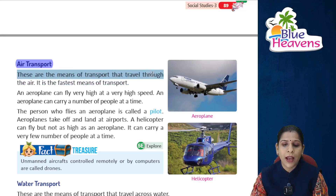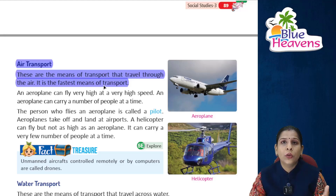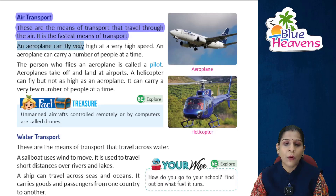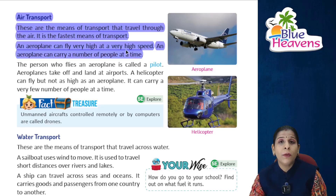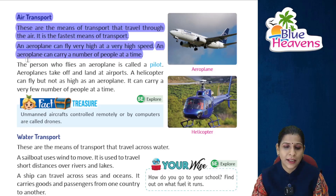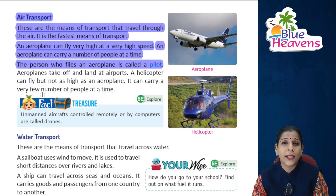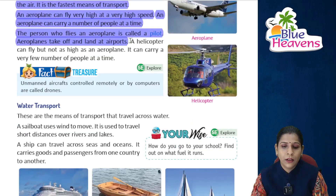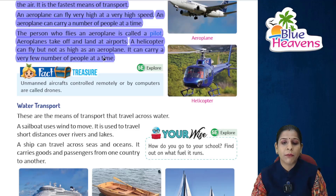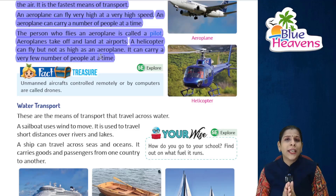Air transport is the fastest means of transport. An aeroplane can fly very high at a very high speed. Aeroplanes take off and land at airports. A helicopter can fly but not as high as an aeroplane, and it can carry only a very few people at a time.